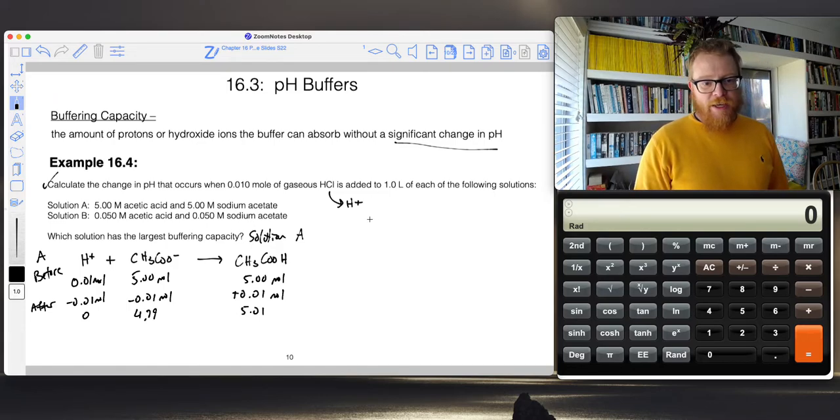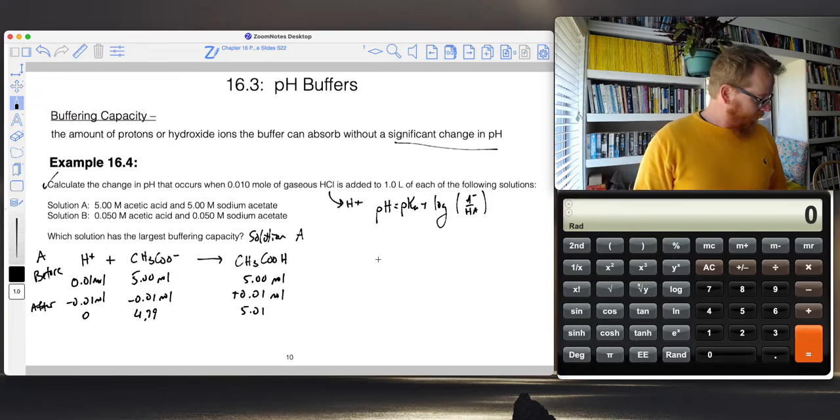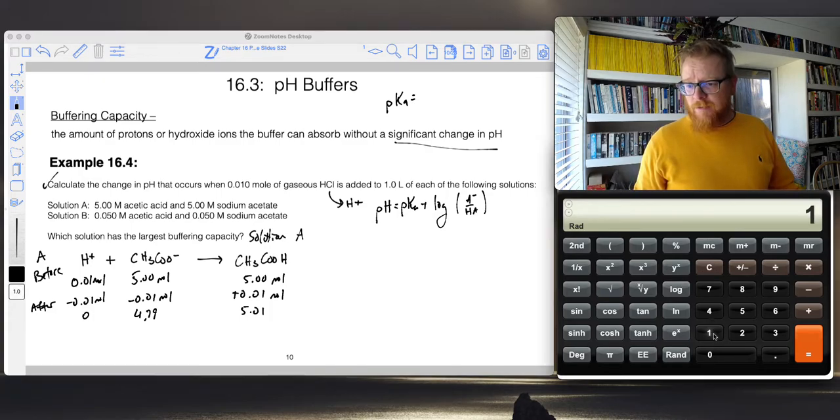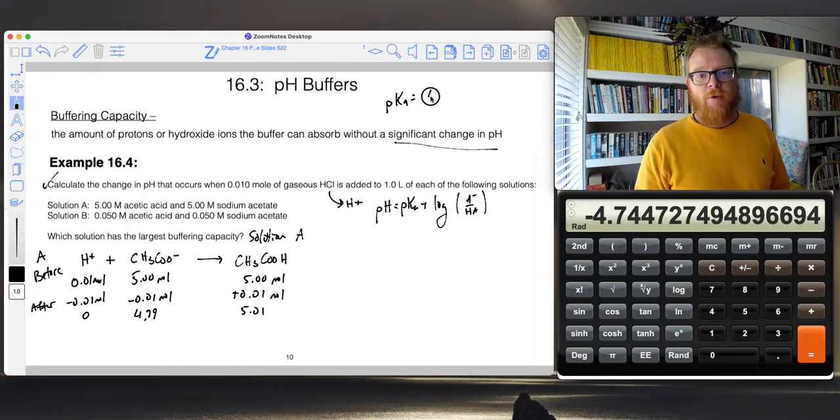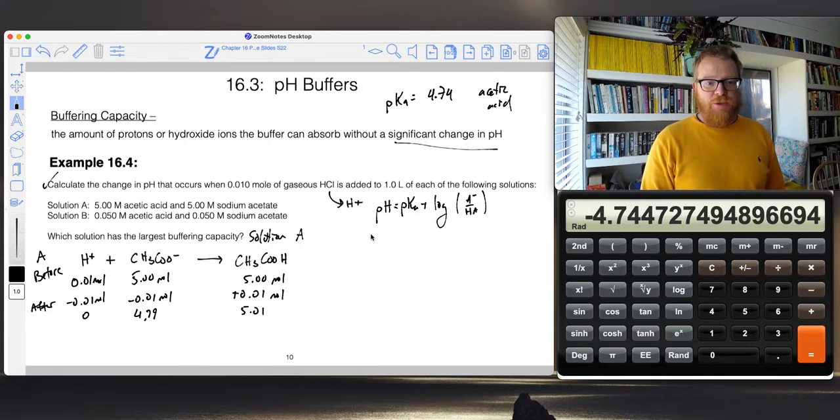Now we can do this using our Henderson-Hasselbalch equation, which is pH equals pKa plus the log of A minus over HA. The pKa of acetic acid, the Ka is 1.8 times 10 to the negative 5, and if I take the log of that, 4.74. So 4.74 for acetic acid. For solution A, the pH is the pKa, which is 4.74, plus the log.